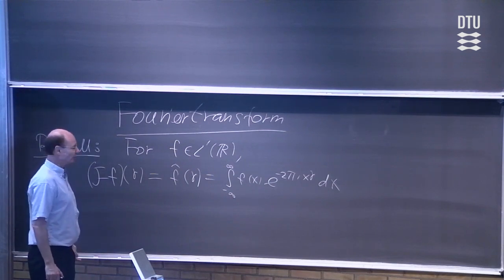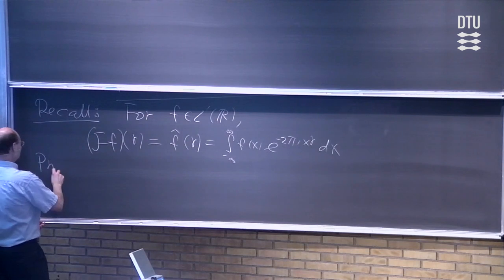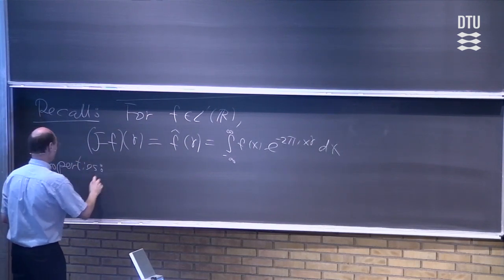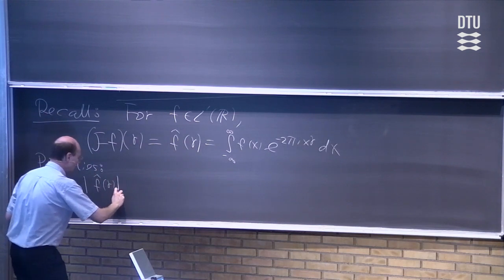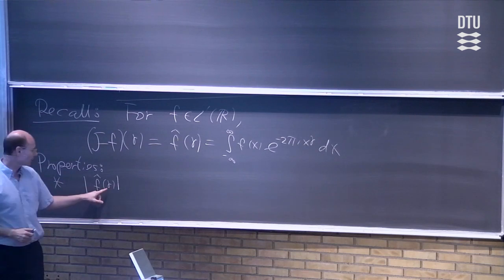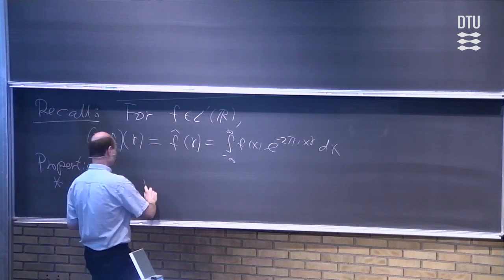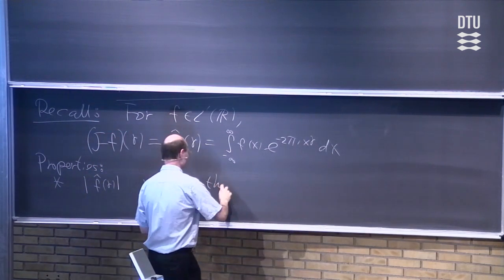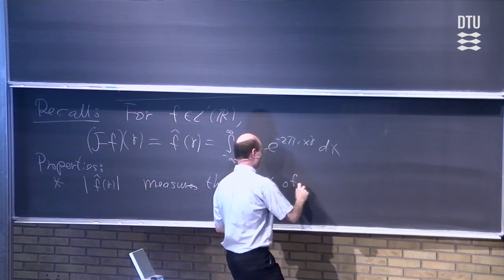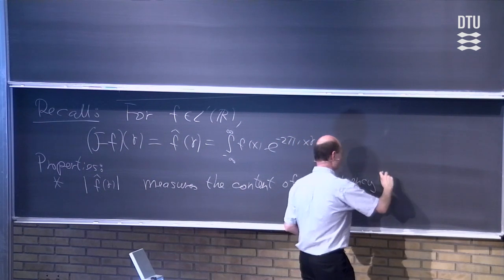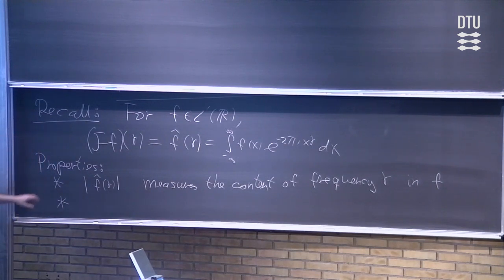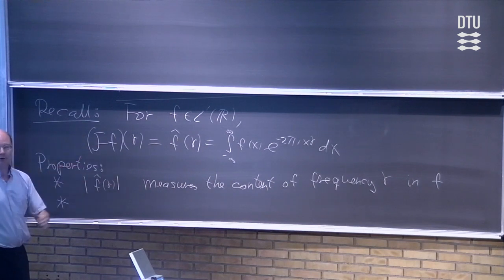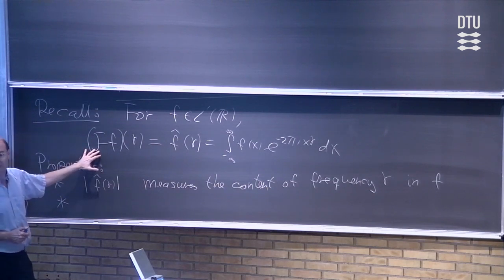We saw some very important properties of the Fourier transform last time. First of all, we saw that the number f-hat of gamma in absolute value measures the content of frequency gamma in our signal. Another important property we saw is that the operator F is a map that goes from L1 into the set of continuous functions on R. But we saw that this map can actually be extended to a unitary operator on L2 of R.